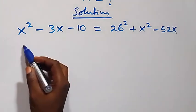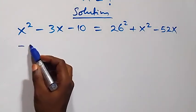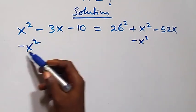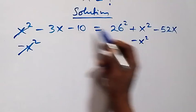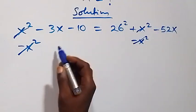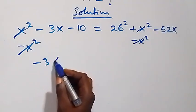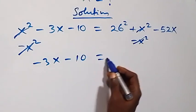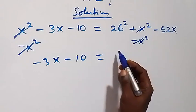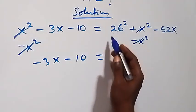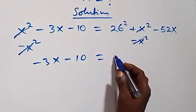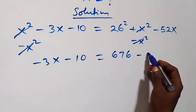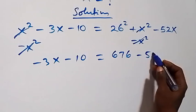We subtract x squared from both sides; the x squared terms cancel each other. We are left with: minus 3x minus 10 equals 676 minus 52x, where 26 squared equals 26 times 26, which is 676.